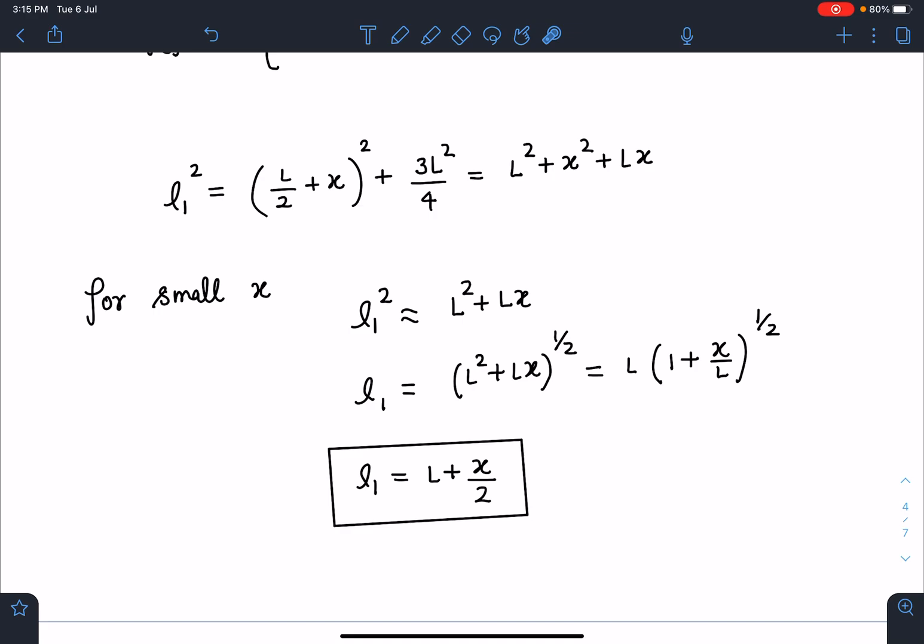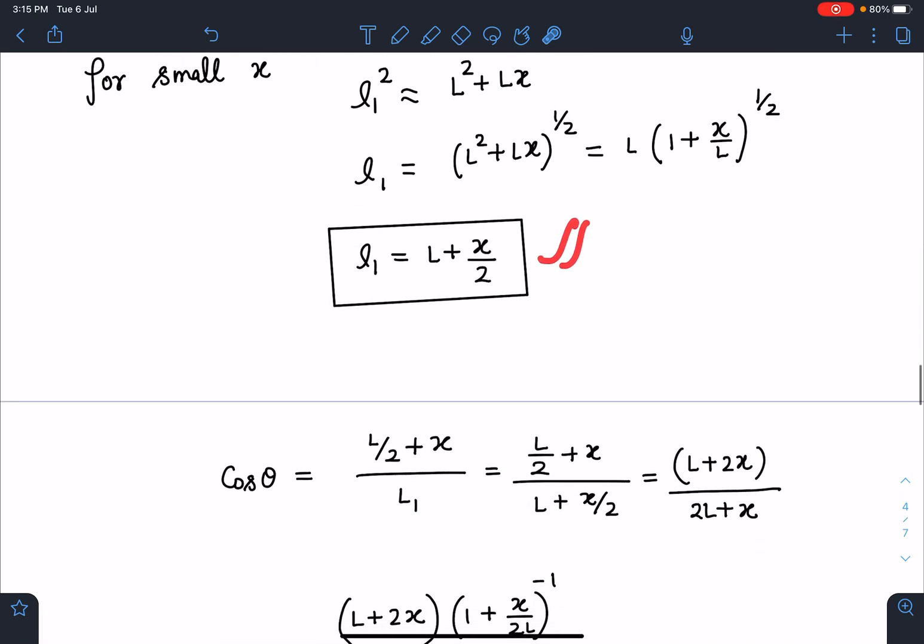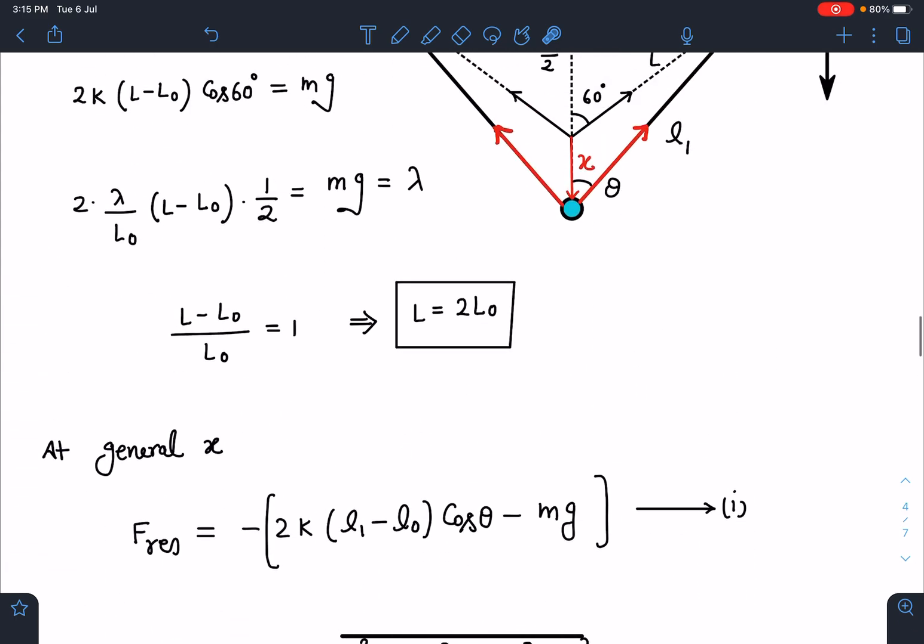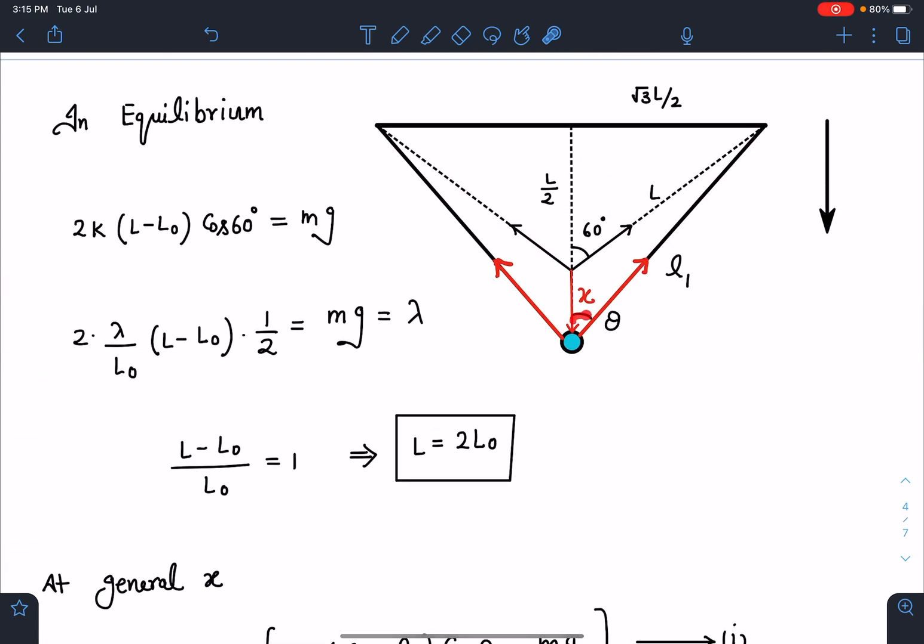In order to prove SHM, we have to bring everything in terms of proportionality-wise x. That's the reason I'm keeping it in this form. Similarly, cos θ I can write as, in this triangle this angle is θ, so L/2 + x divided by L₁.